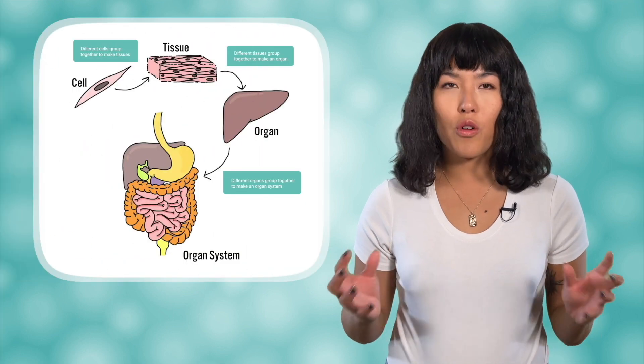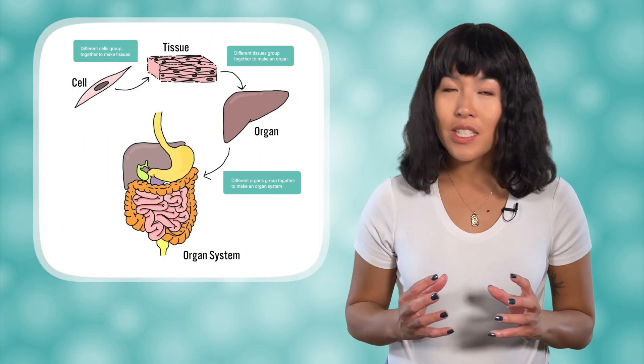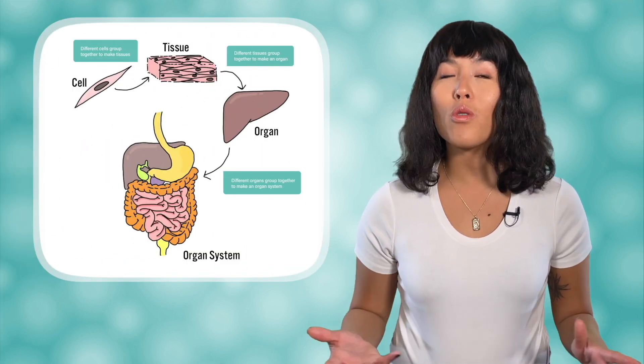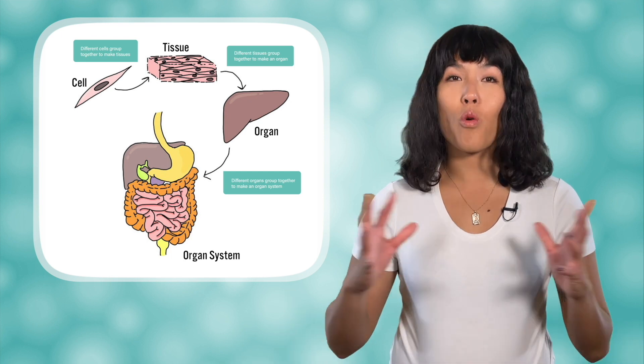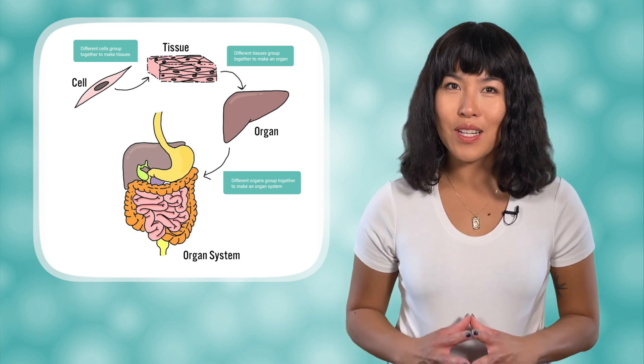The human body is a complex but very organized and efficient machine. Looking at the hierarchy, cells are the building blocks of the body. Together, cells form tissues, tissues form organs, and organs come together to form organ systems.